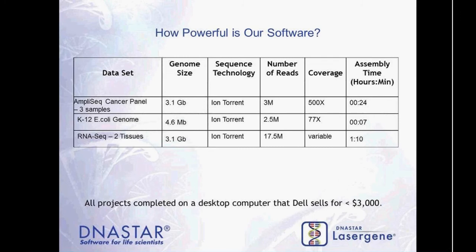These assemblies run on a Dell computer purchasable for under $3,000. If you're making hardware decisions, contact us — we can help ensure you're not buying more than you need while still having enough for your project types. For de novo Ion Torrent assemblies of microbial genomes, we get a really nice contig N50 of around 88 KB, with assembly time typically 30 minutes to an hour. The most important metric for de novo assembly is contig accuracy, since that directly affects time spent on gap closure.